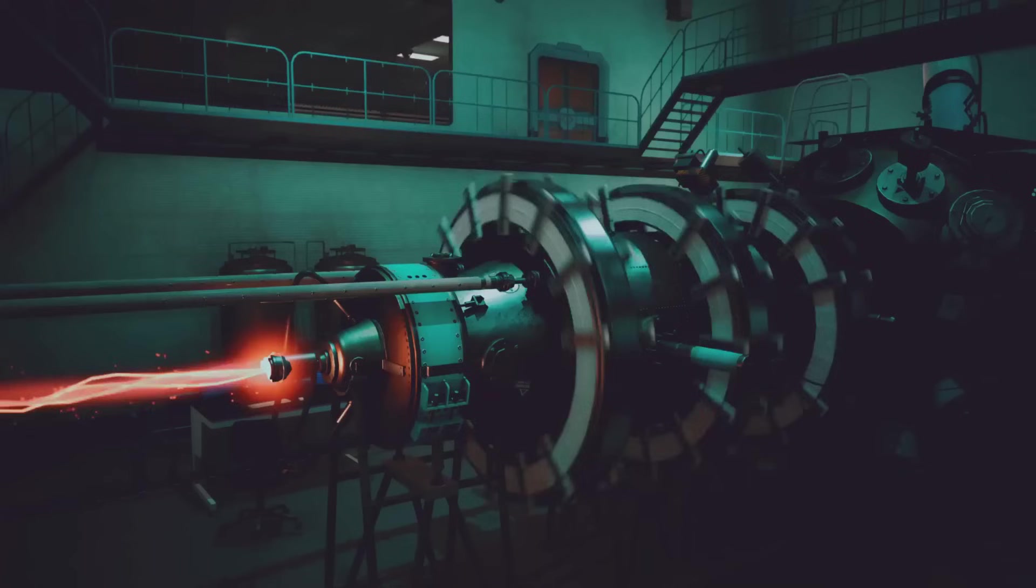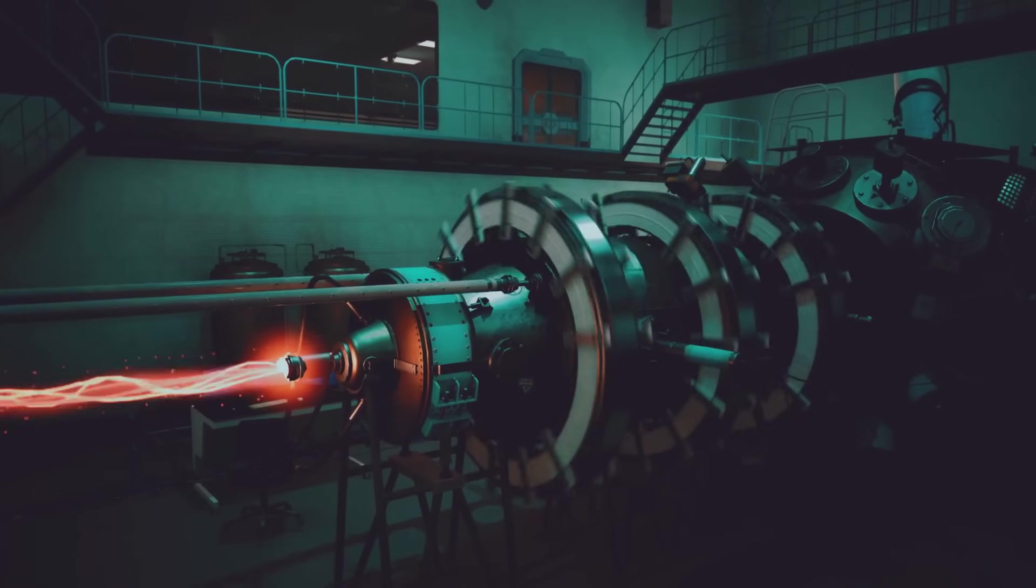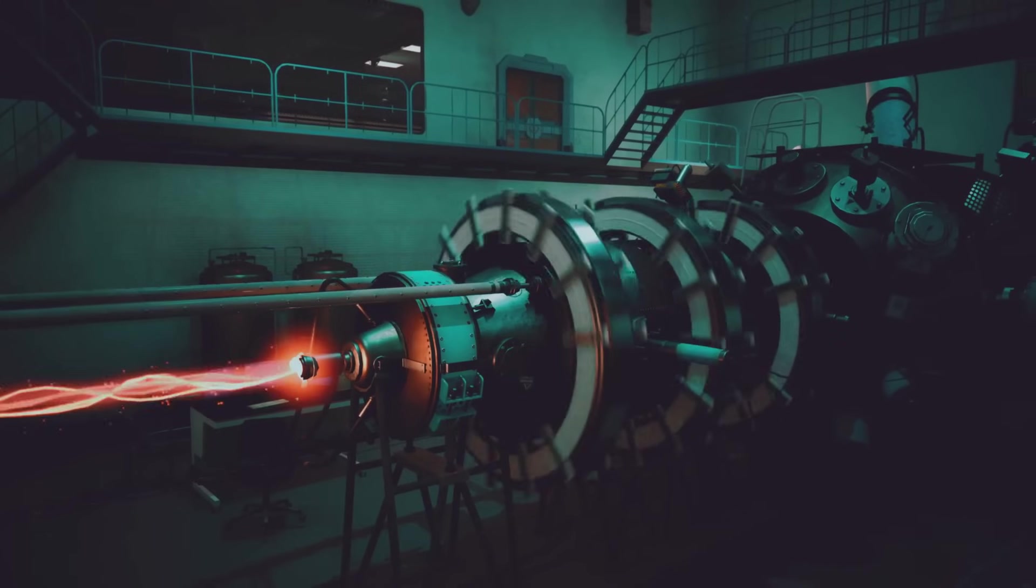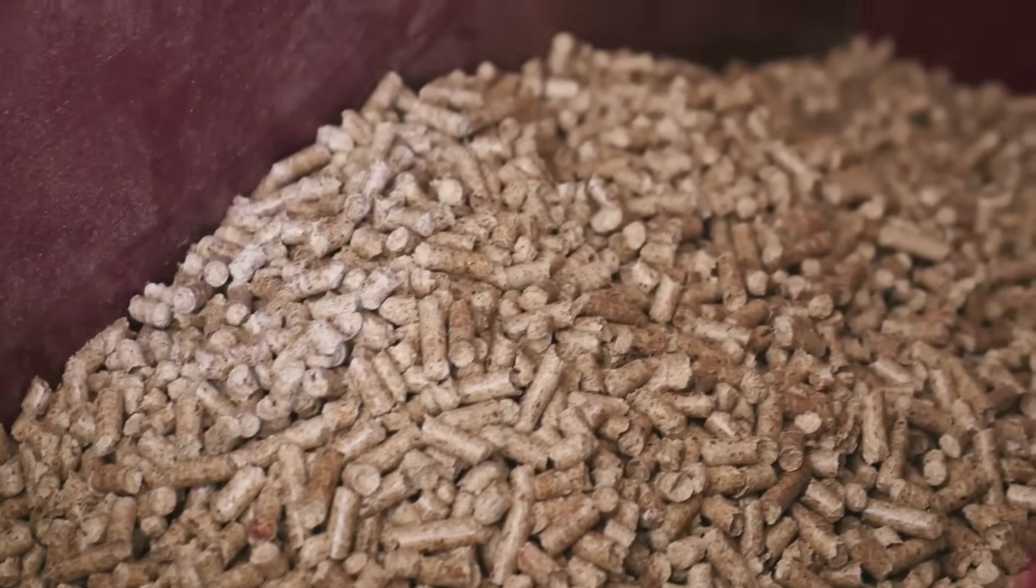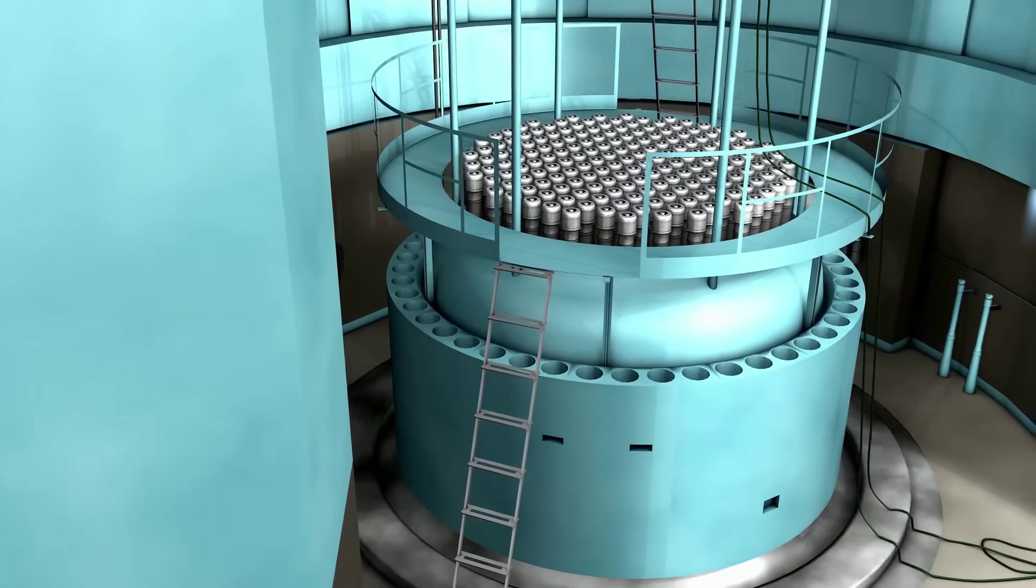How do we turn fission into electricity? Enter the nuclear reactor. The reactor's job is to start and control a chain reaction, generating heat. Inside, uranium fuel pellets are stacked in metal tubes, fuel rods, bundled together in the reactor core.